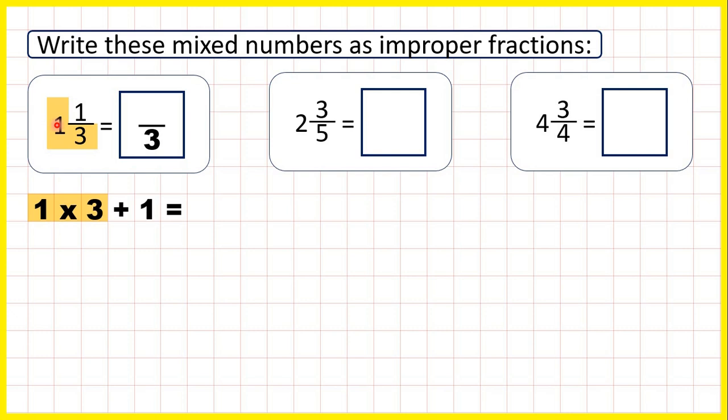That's one times three, and then we add the numerator. So one times three is three, plus one is four. Our numerator is four, which means our improper fraction is four thirds.